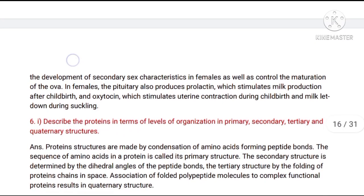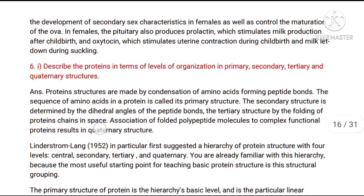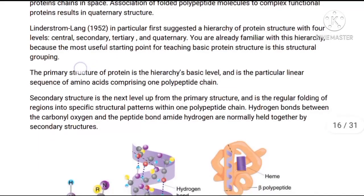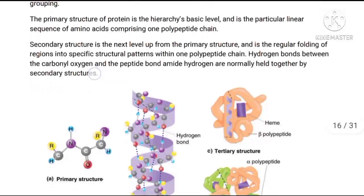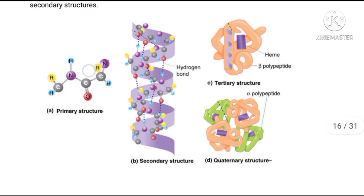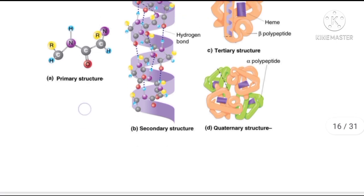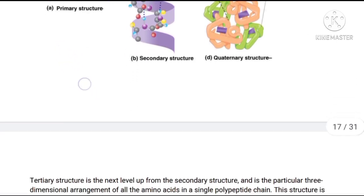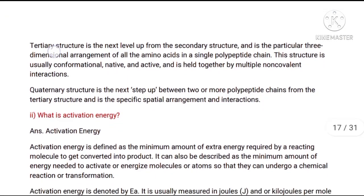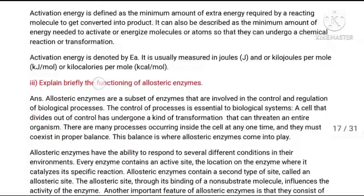Question number 6, first part: Describe the protein in terms of levels of organization — primary, secondary, tertiary, and quaternary structures. Question number 6, second part: What is activation energy? Question number 6, third part: Explain the functioning of allosteric enzymes.